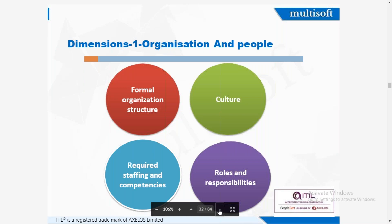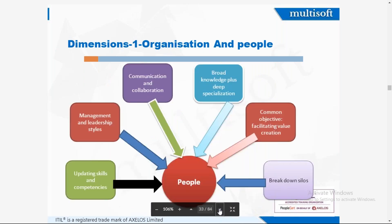The first dimension — organization and people — means we should have a formal organizational structure, culture, responsibilities, staffing, and competency. By the term people, they need updating of skills and competency management, leadership styles, communication and collaboration, broad knowledge plus deep specialization, common objectives, facilitation of value co-creation, and breakdown of silos. Silos are the gaps between the departments or groups — there should be no communication gaps.